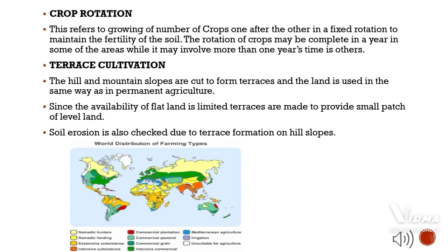Crop rotation refers to growing a number of crops one after the other in a fixed rotation to maintain the fertility of the soil. The rotation of crops may be completed in a year in some areas while it may involve more than one year's time in others. Terrace cultivation: Hill and mountain slopes are cut into terraces and the land is used in the same way as in permanent agriculture. Since the availability of flat land is limited, terraces are made to provide small patches of level land. Soil erosion is also checked due to terrace formation on hill slopes.